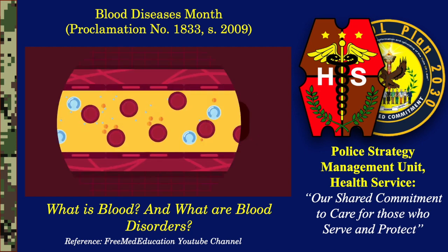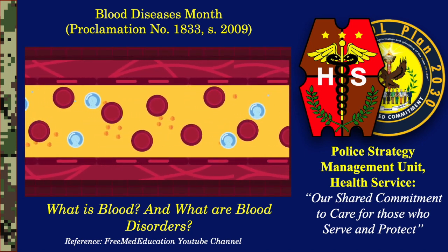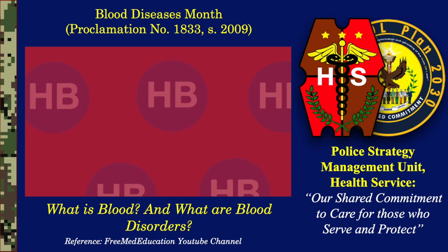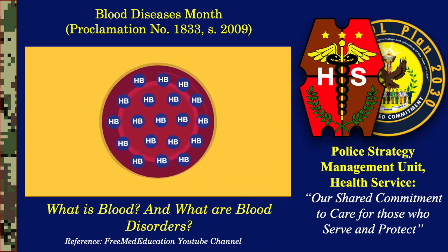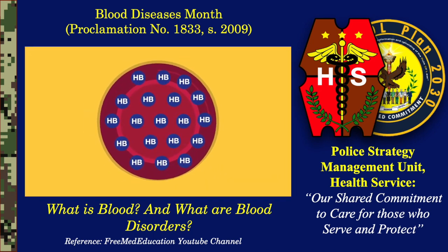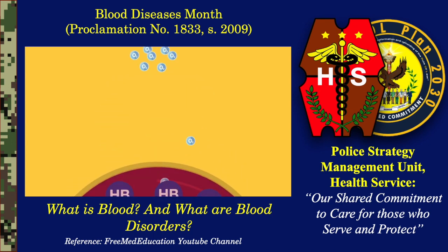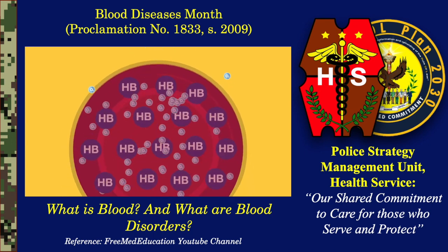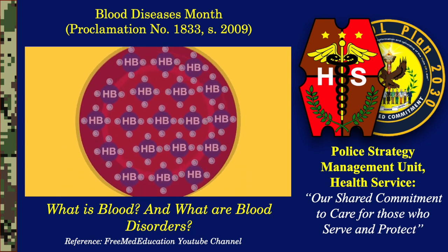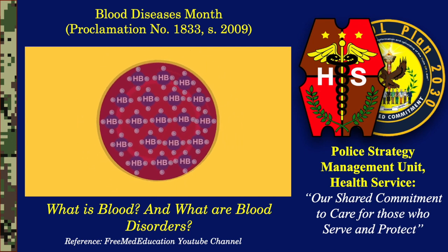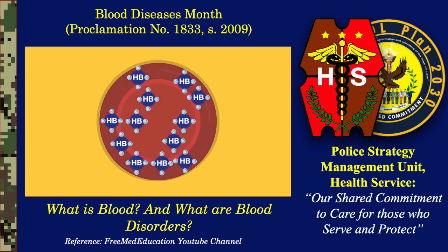Thalassemia is a group of inherited blood disorders. These disorders are caused by genetic mutations that prevent the normal production of hemoglobin. Hemoglobin is the carrier molecule which carries the oxygen obtained during the process of respiration. When red blood cells do not have enough hemoglobin, oxygen doesn't get to all parts of the body.